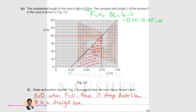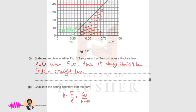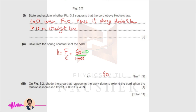Next, calculate the spring constant. Take the coordinate (1, 60) and the coordinate (0.25, 0) and calculate the gradient: 60 minus 0 divided by 1 minus 0.25 gives 80 Newtons per meter.